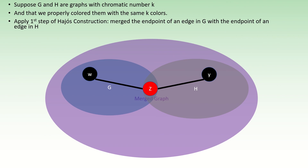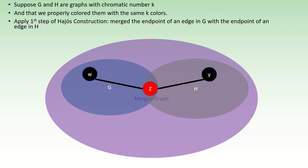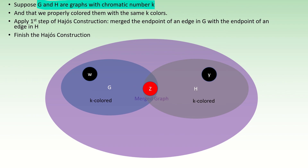Notice that neither of these subgraphs could be colored with fewer than k colors, because they are isomorphic to the original graphs G and H, which were both defined to have chromatic number k. So far so good — our graph still has chromatic number at least k. Now let's continue the Hayosh construction: delete the chosen edges, and connect the endpoints that were not merged. This resulting graph cannot have chromatic number less than k.